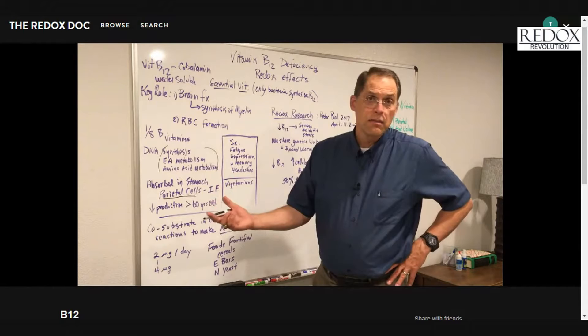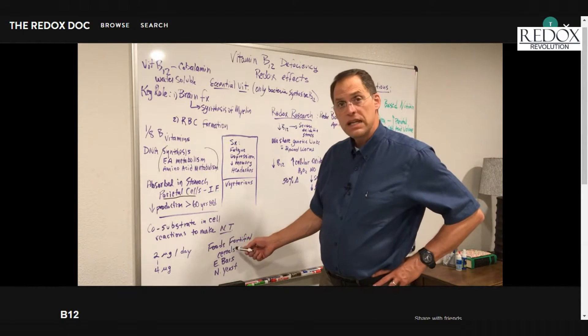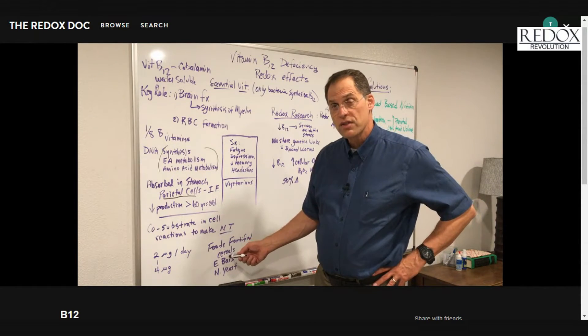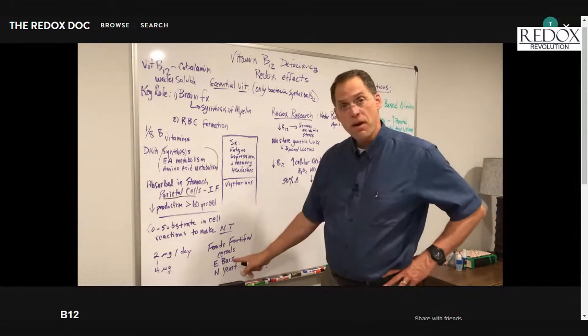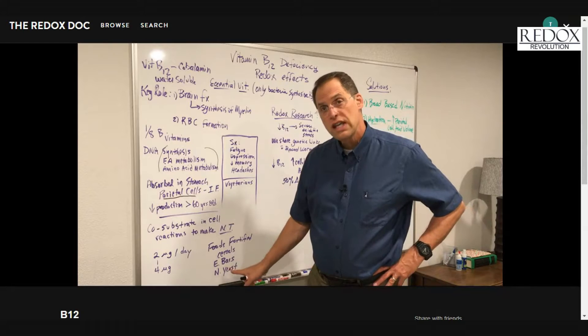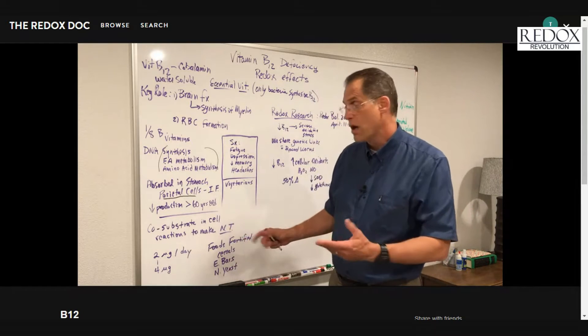B12 is fortified in food, kind of like vitamin D is in milk. Vitamin B12 is put in cereals like Cap'n Crunch, things like that, energy bars, and in nutritional yeast fortified with B12.